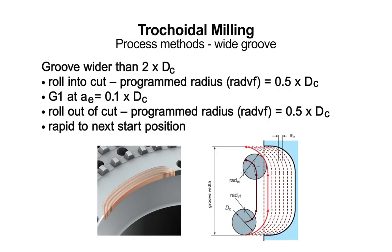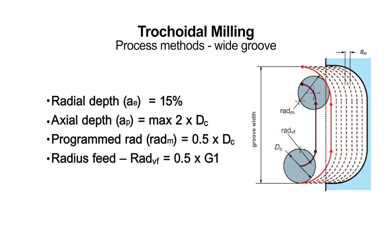When trochoidal milling a feature with a width greater than two times the cutting diameter, maintain a linear slice with a radial engagement of 10% of the cutter diameter. Roll in and out of cut with a centerline programmed radius of 50% of the cutter diameter. The radial engagement should not exceed 15% of the cutter diameter on roll in or roll out of cut.